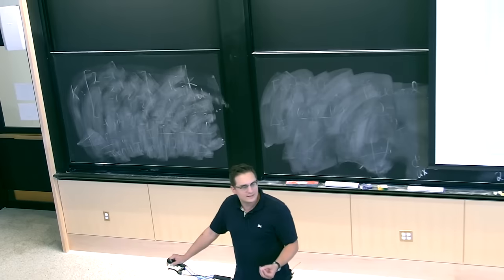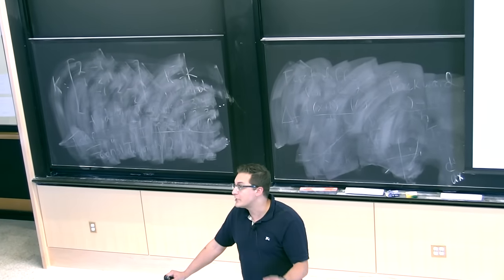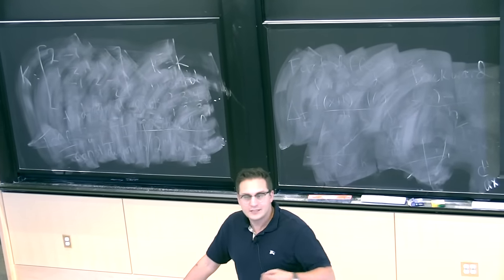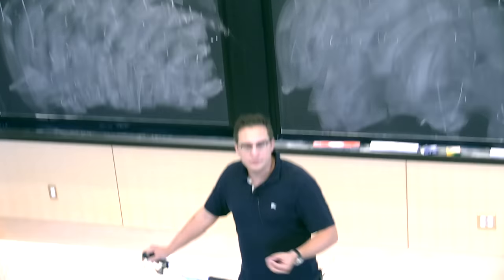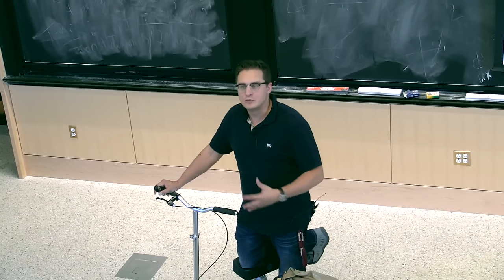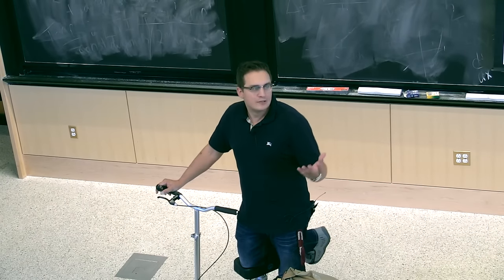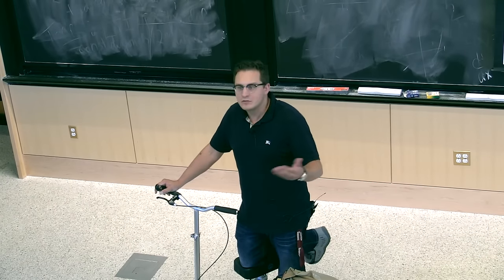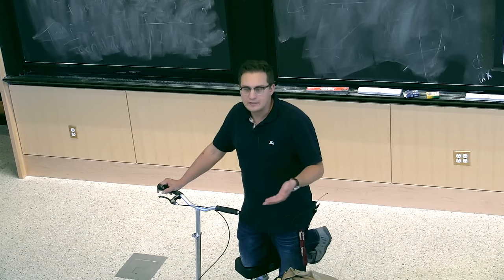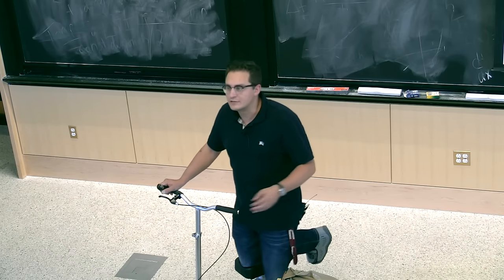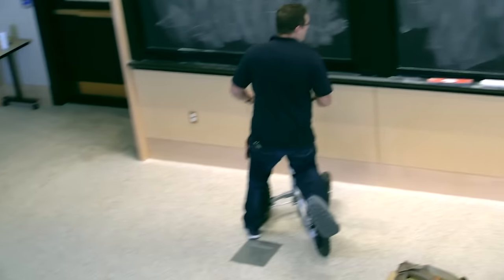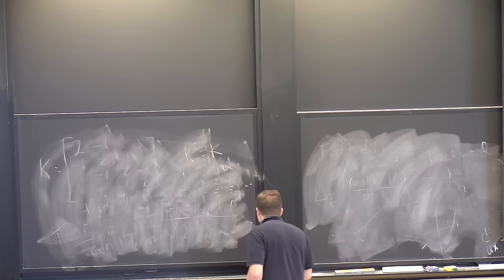Returning to our limiting distribution, which happened to be Gaussian. But if the central limit theorem told us that the limiting distribution of some average was something that looked like a Poisson or an exponential, then we would just have, in the same way, taking the quintiles of the exponential distribution. So let's go back to what we had.